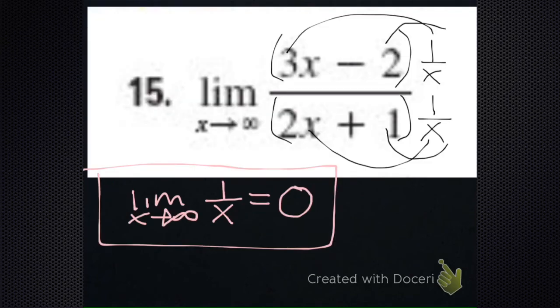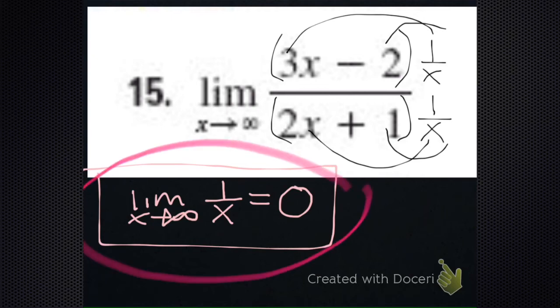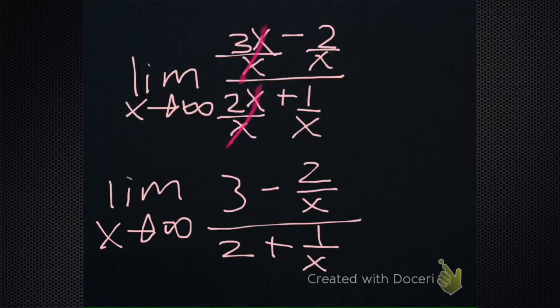Now we get to use the property that the limit as x goes to infinity of 1 over x is 0. And 2 over x also goes to 0 — anything over x goes to 0 as long as the anything is a constant. So this 2 over x goes to 0, and this 1 over x goes to 0.